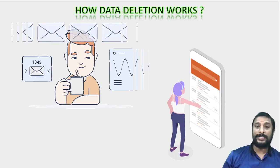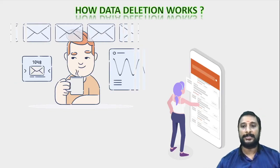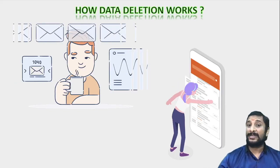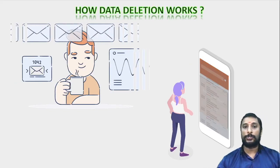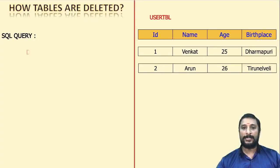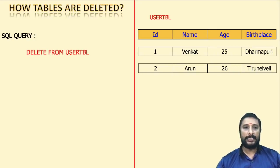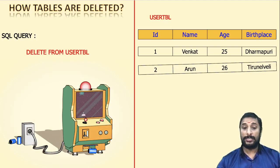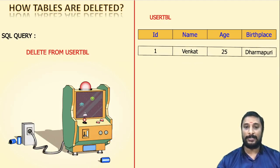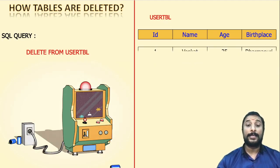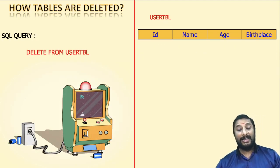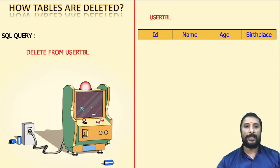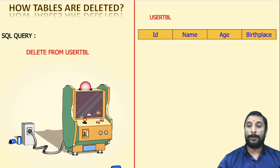So let's talk about how data is deleted. Using a DELETE statement, you can do it. Here is a table — and here is the data. The query is DELETE FROM table, and you are able to see the data getting deleted. Deleting the entire data is happening via this particular query.